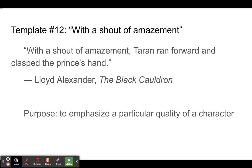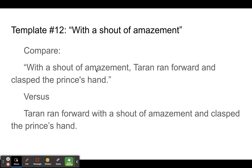So why do you put it in front like this? Let's compare. 'With a shout of amazement, Taryn ran forward and clasped the prince's hand.' Versus: 'Taryn ran forward with a shout of amazement and clasped the prince's hand.' You have the exact same words, but just put in a different order. And you can see how in the second sentence, the emphasis — the main thing that we visualize and see — is 'Taryn ran forward,' because that's what happens first, that's what we see first. But in this one, it emphasizes the shout of amazement because it comes first. By taking it out and putting it in front of the subject, it kind of makes it pop.